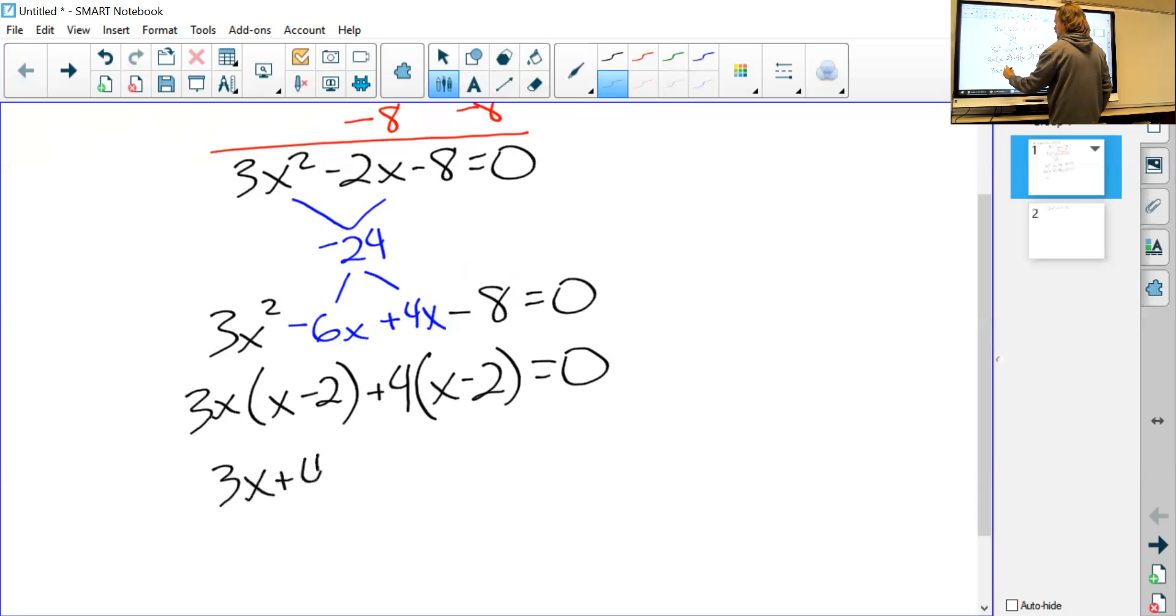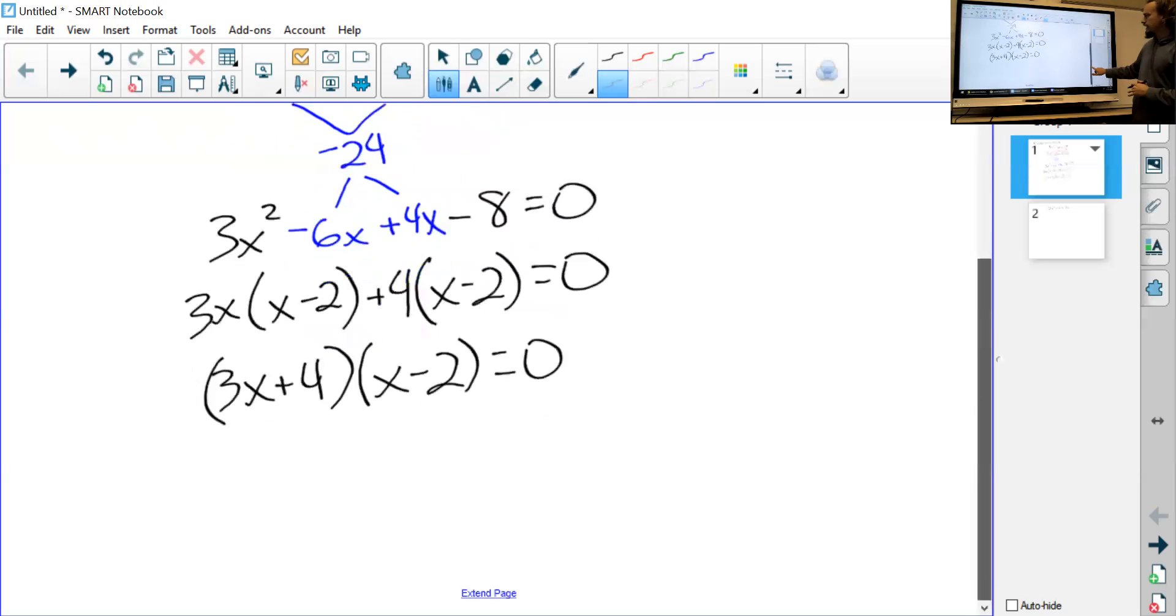That still equals zero, so I factor out everything outside the parentheses. That's (3x + 4)(x - 2) = 0. That's what we've been doing. Now I want to know what values of x will actually make this work. The whole beauty of factoring is since we're just multiplying one thing by another and we want the answer to be zero, if I can make either of these quantities equal zero, then this equation will be true.